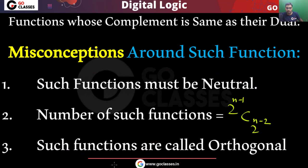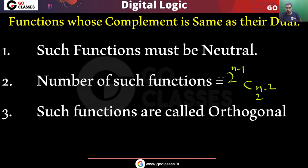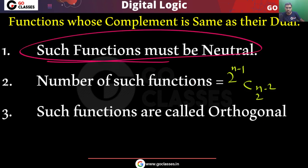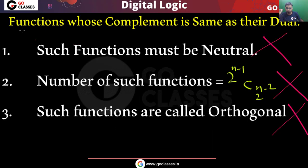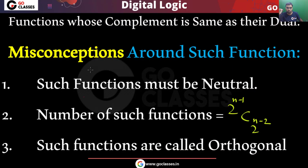So all three statements are wrong: such functions must be neutral — wrong; the formula for the number of such functions — wrong; such functions are called orthogonal — wrong. I hope you understood what are the misconceptions related to these functions.